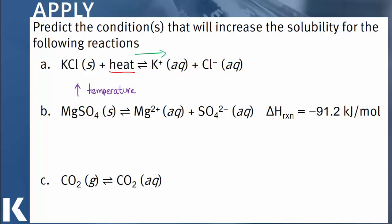Part B describes the dissolution of magnesium sulfate into magnesium ions and sulfate ions. The reaction has a negative change in heat, which indicates that the dissolution is exothermic.